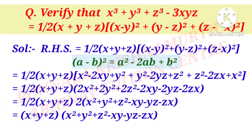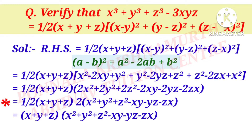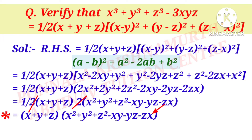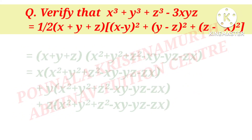That is equal to 1/2 into (x + y + z) into 2(x² + y² + z² − xy − yz − zx). The 1/2 and 2 cancel, giving (x + y + z)(x² + y² + z² − xy − yz − zx).